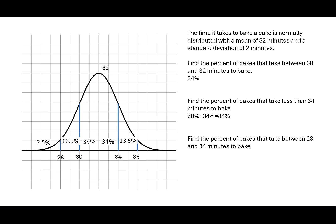Our last problem says find the percent of cakes that take between 28 and 34 minutes to bake. Looking at 28 and going over to 34, I see three numbers. I have 13.5 percent, 34 percent, and 34 percent. When I add those three together, I get 81.5 percent.